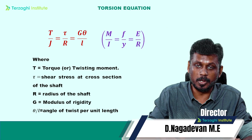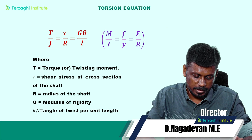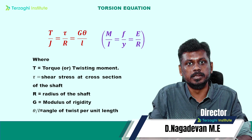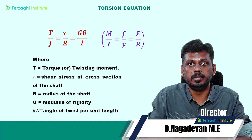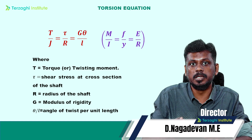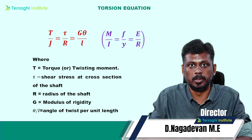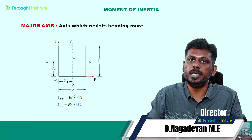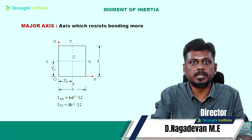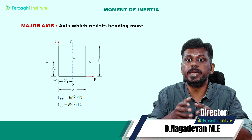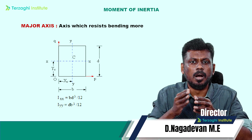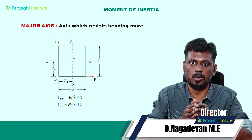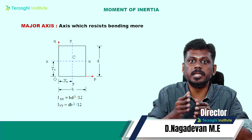When you go to the torsion equation, T/J = τ/R = Gθ/L. T is called torque. J is called polar moment of inertia. Moment of inertia means IXX and IYY — IXX is moment of inertia about the X-axis, IYY is about the Y-axis. The Y-axis is usually the minor axis, and the X-axis is the major axis.